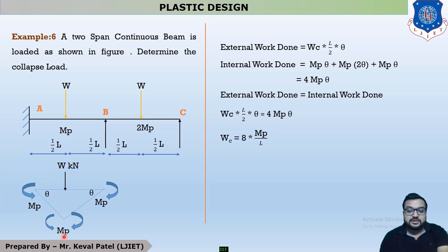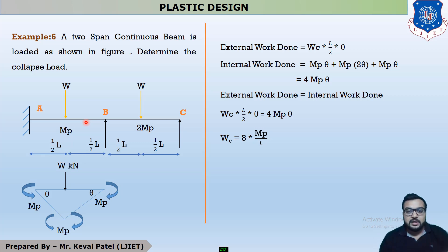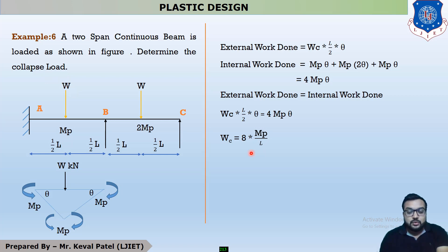Internal work done is MP×theta + MP×2theta + MP×2theta. You consider this MP value because it is clearly mentioned in the equation. Equating external work done to internal work done: WC × (L/2) × theta = 4MP × theta. Solving for the collapse load, WC = 8MP/L.